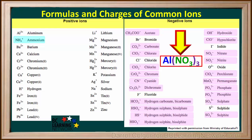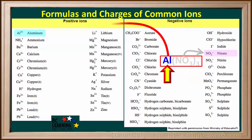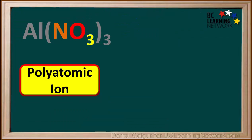The formula we're working with is Al(NO3)3. We see that NO3 in the formula is from the polyatomic ion nitrate, NO3⁻, and that the Al in the formula is from the single metal ion Al³⁺. So Al(NO3)3 contains the polyatomic ion nitrate.